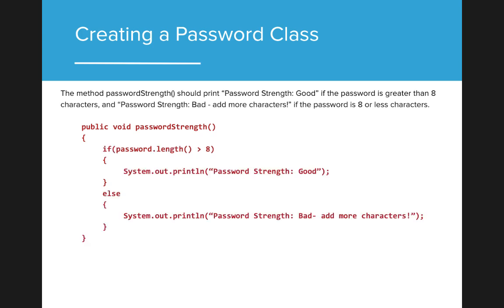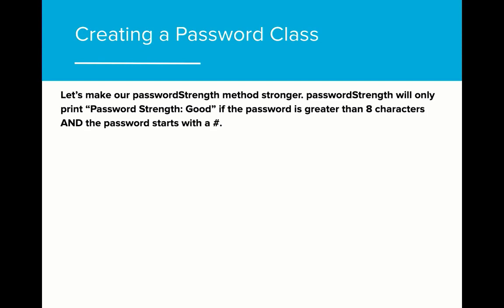Based on the lessons we've learned so far, we can implement this method by using an if-else statement. If the password length is longer than 8, then we will print that the strength is good. Otherwise, we will print that the strength is bad. But let's say that we wanted to make the password strength even more sophisticated. Suppose we learned that adding a pound sign in front of the password actually makes it more secure, so we want to make sure all users are doing the same. How can we implement this in our program by testing more than one thing at a time to make a decision?